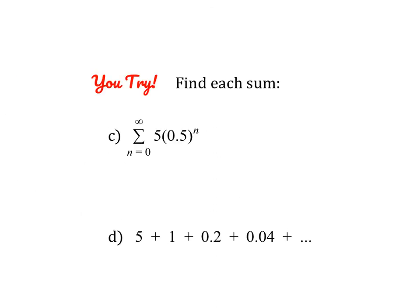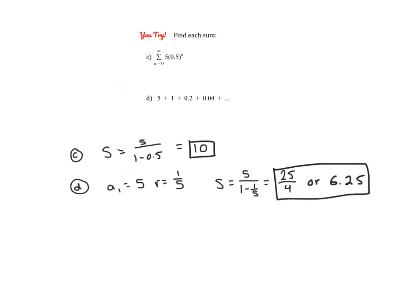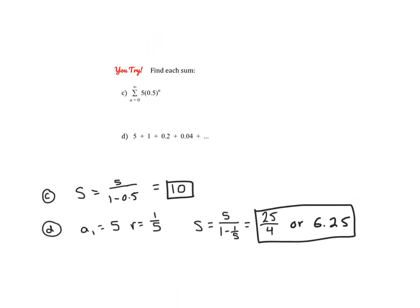Go ahead and pause the video and give these last two problems a try. For the first one, it's clear what a sub 1 and r are: 5 over 1 minus 0.5 is 10. For the second one, the r value is 1 fifth — you can verify with second term divided by first, and third divided by second. So the answer is 25 fourths or 6.25. Either way is fine. Thank you for watching.